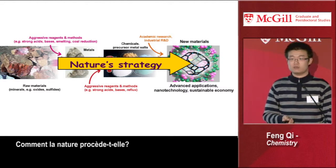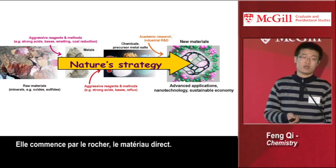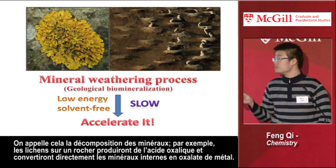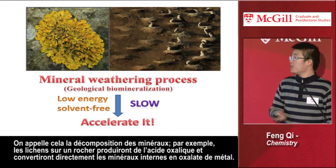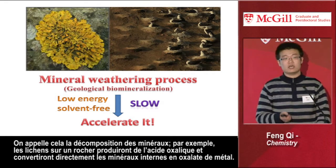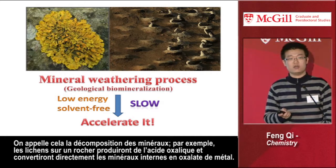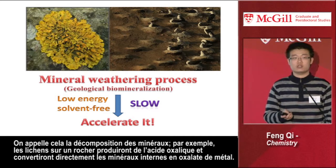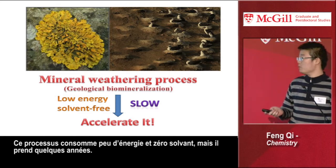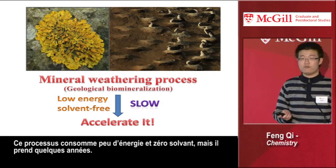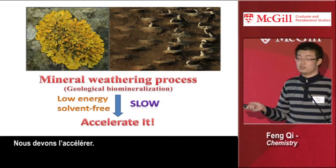How does nature make new materials? Nature starts from rock directly to the materials. This method has been called the mineral weathering process. For example, the lichens on the rock will produce oxalic acid, and it will convert the inert minerals directly to metal oxalate materials. This process is very low energy and solvent-free, but it takes a couple of years — we need to accelerate it.